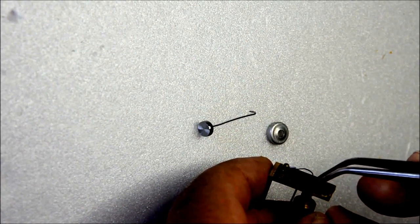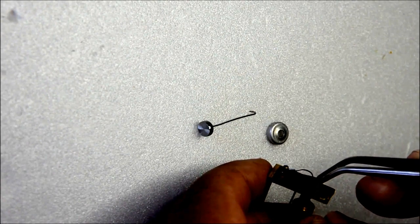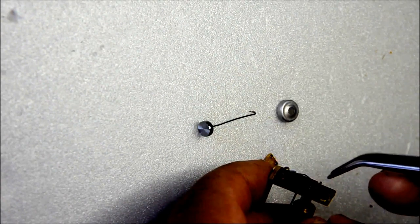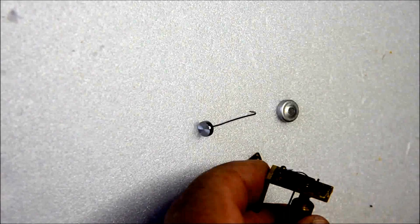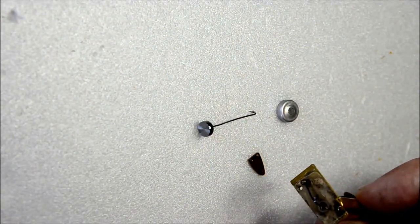So I simply take my forceps, lift up on the triangular valve plate, and it just slides up on the two retaining posts. And once you get it past the top of the post, it should pop right on and off as shown.